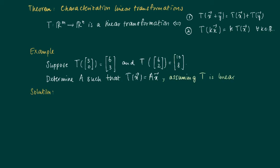Then the solution is as follows. We know that [6,3] equals T of [3,0]. But T of [3,0] is T of 3 times [1,0].